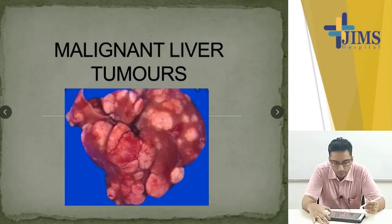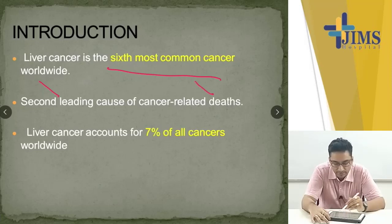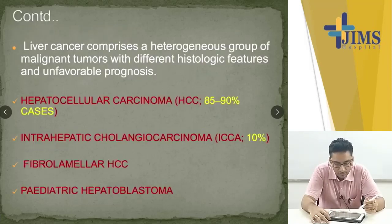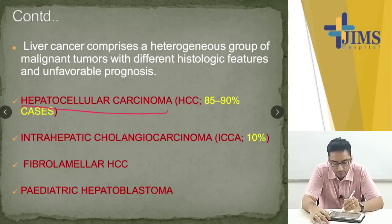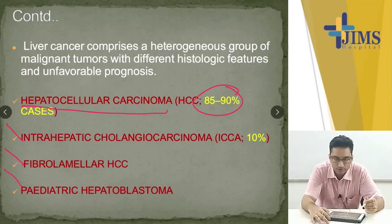Now coming to malignant tumors. Liver cancer is the sixth most common cancer and the second leading cause of cancer-related deaths. The most common is hepatocellular carcinoma at 85 to 90%. Then there is intrahepatic cholangiocarcinoma, fibrolamellar hepatocellular carcinoma, and pediatric hepatoblastoma.